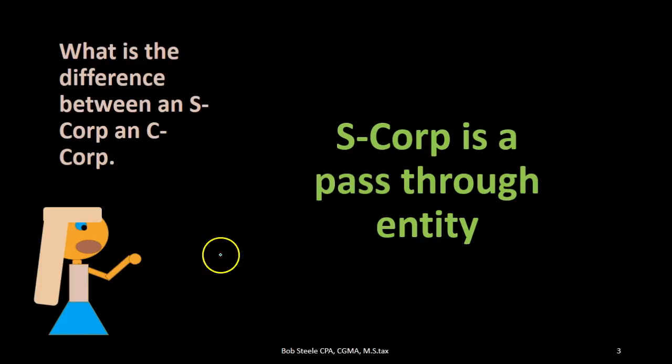The S-Corporation is a concept to try to get the best of both worlds — still being a corporation, still having that liability protection. However, the money or the income flows through to the shareholders' 1040 rather than being taxed at the corporate level.